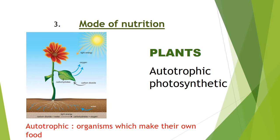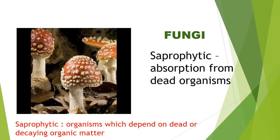Number three: mode of nutrition. Under this, number one, plants — autotrophic means organisms which make their own food. We all know that plants make their own food, and hence they are autotrophic. Number two, fungi — saprophytic, meaning absorption from dead organisms. Saprophytic means organisms which depend on dead or decaying organic matter. For example, if we keep moist bread aside for many days, we will see that the surface of the bread changes, which means fungi is now present there. So they are saprophytic.